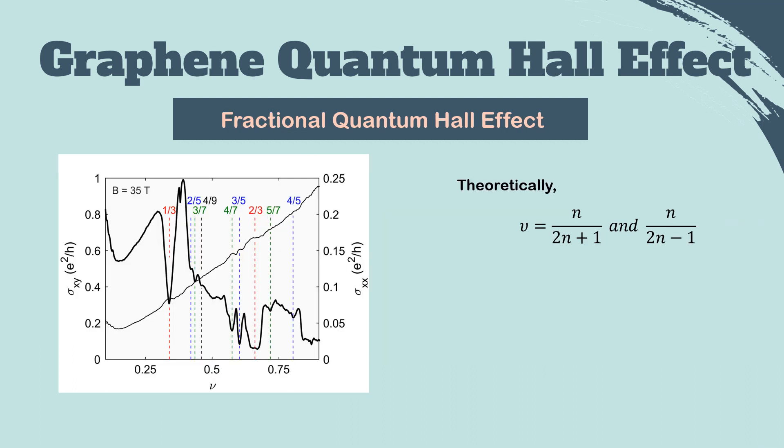Also, the fractional quantum Hall effect can be observed in graphene when the magnetic field is applied. Theoretically, this phenomenon happens when the filling factor is n over 2n plus 1 and n over 2n minus 1. However, the value of the filling factor in reality is slightly different from the theoretical one. We can explain this difference with the direction of an applied magnetic field and the Landau level mixing in graphene.